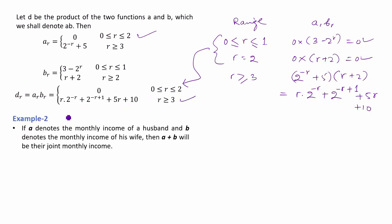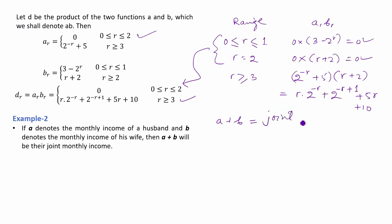If a denotes the monthly income of a husband and b denotes the monthly income of his wife, then a plus b will be their joint monthly income. Here a and b can be represented in the form of numeric functions, and when you find a plus b, then a plus b equals their joint monthly income.